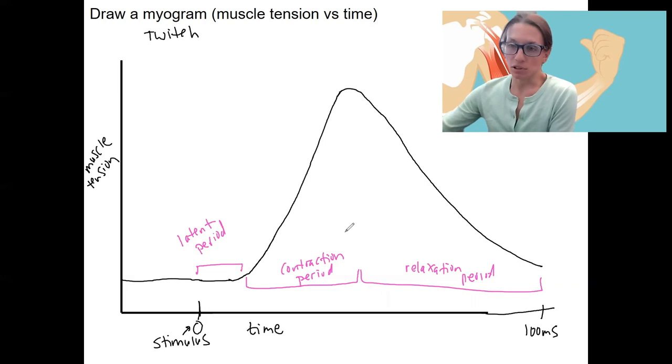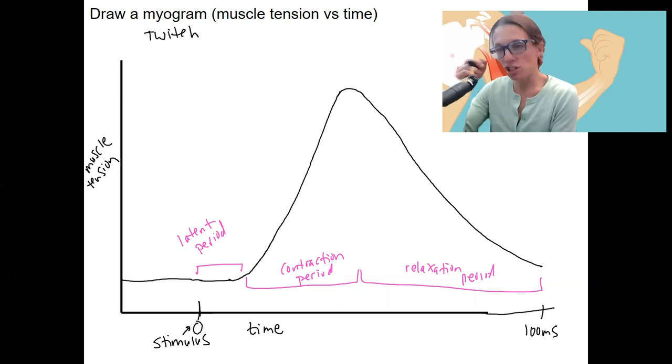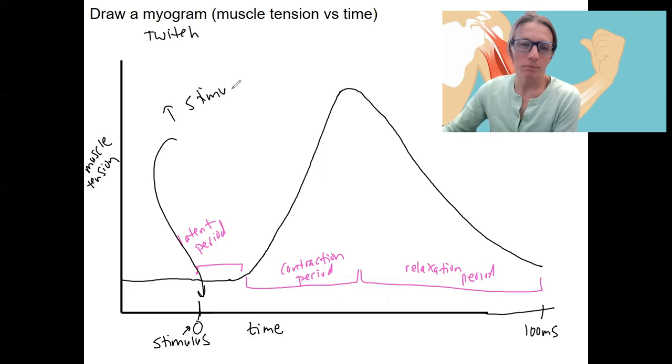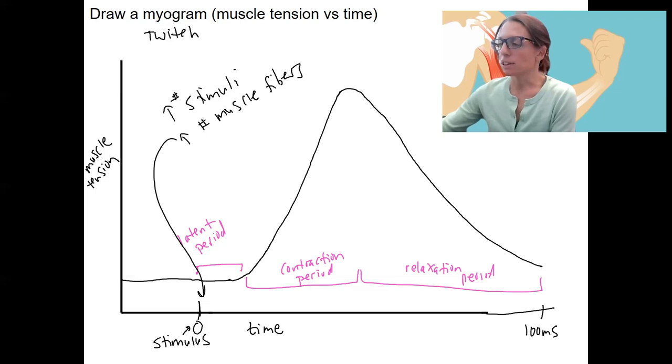So how do we increase the force of muscle contraction? If we want to have more than twitches, we could either increase the frequency of action potentials, so increase the number of stimuli, or we could increase the number of muscle fibers that are responding, that are contracting in the first place. So we're going to talk in this video about summation, which is adding together of twitches due to multiple stimuli. Increased number of muscle fibers we'll talk in the next video, which is about motor units.